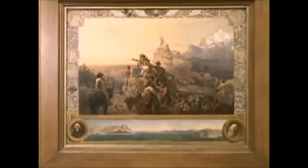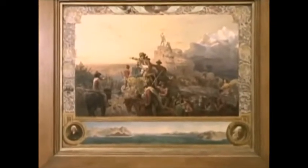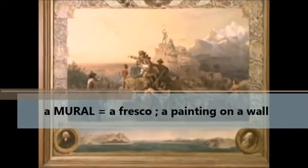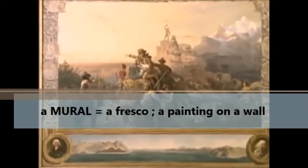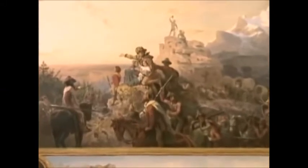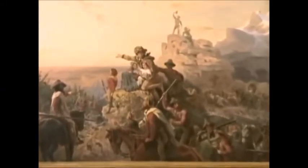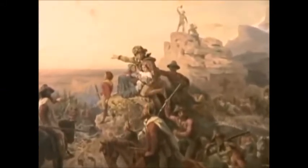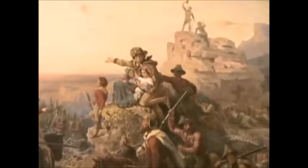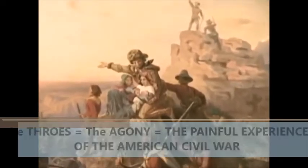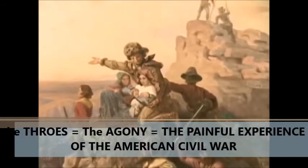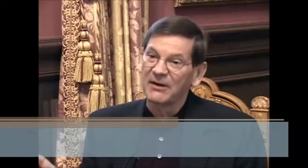This is a study by Emanuel Leutze for his large mural in the House of Representatives side of the national capital. It was painted about 1861, right at the time when the nation was going through the throes of a civil war. This is Leutze's narrative of unity of the country — the Manifest Destiny from sea to sea.